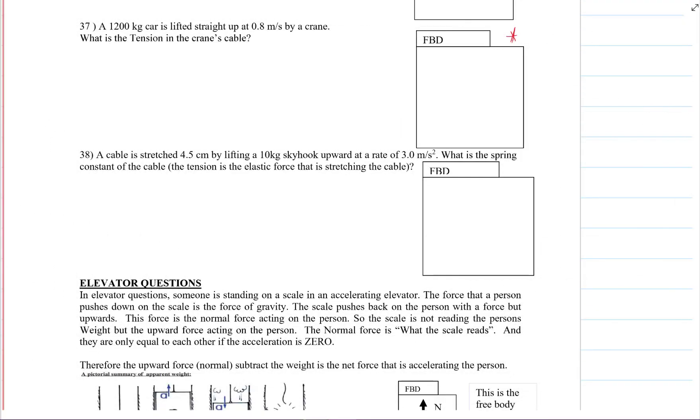Welcome back Physics Science. We're going to do 37 and 38 here on the worksheet. 37. A 1200 kilogram car is lifted straight up at a speed of 0.8 meters per second by a crane. What is the tension in the crane's cable? Okay, so go ahead and try it.